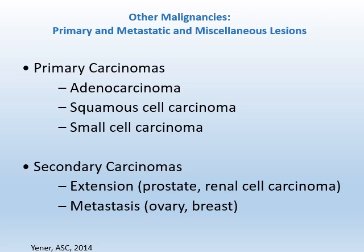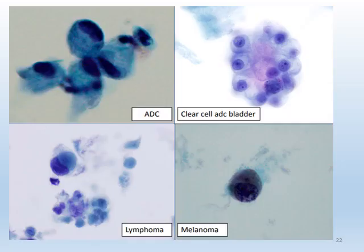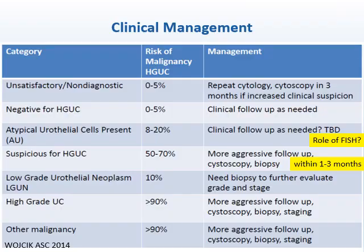The last category is other malignancies, including primary carcinomas such as adenocarcinoma, squamous cell carcinoma, or small cell carcinoma, and secondary malignancies including extension from adjacent organs like prostate or renal cell carcinoma, and metastasis. The first picture shows adenocarcinoma with eccentrically placed irregular nuclei, clumped and hyperchromatic chromatin, with finely vacuolated cytoplasm. The second picture shows clear cell adenocarcinoma of the bladder with hobnailed cell configuration, abundant clear and bifurcated cytoplasm, centrally located nucleus, and prominent nucleoli. Lymphoma and melanoma can also be seen.